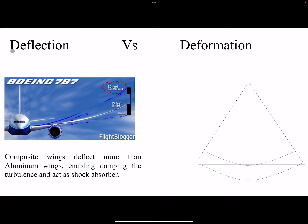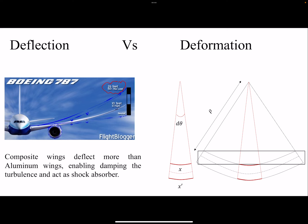For deformation it is a totally different story. Consider a beam: after deflection it takes a curvature and the central axis does not change, but the top part goes into compression and the bottom part into tension. The radius of curvature is called rho. Taking a segment of this deflected beam, the deformation angle is d-theta. The bottom part in tension has length x-prime, which is greater than x, and rho is the radius of curvature.